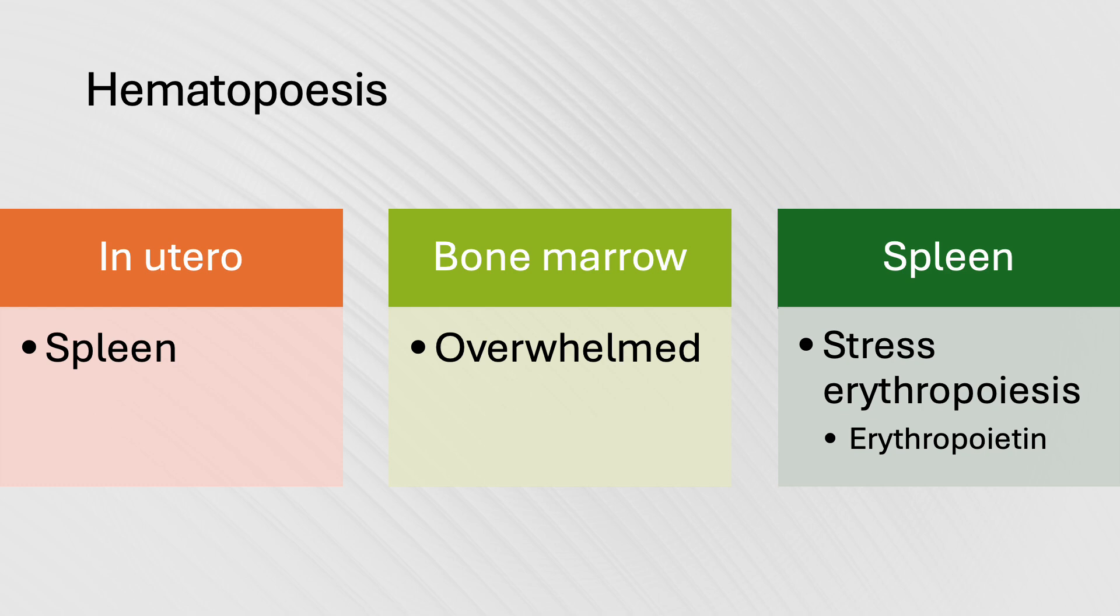Now let's talk hematopoiesis. While you are still in utero before you are born, the spleen is making the blood as the bone marrow will in the future. The spleen plays a vital role in erythropoiesis, the process of red blood cell production, particularly in response to stress and inflammation. When the bone marrow's capacity is overwhelmed or when conditions like hypoxia or inflammation trigger the need for increased red cells, the spleen steps in to produce red blood cells, a process known as stress erythropoiesis.